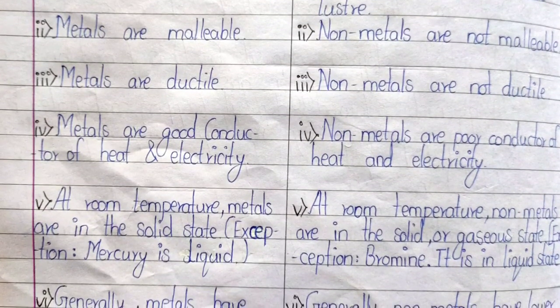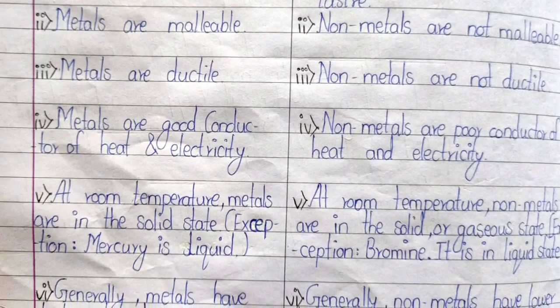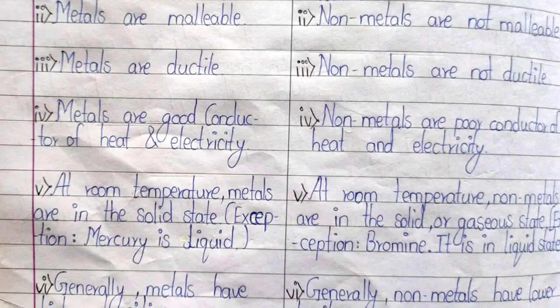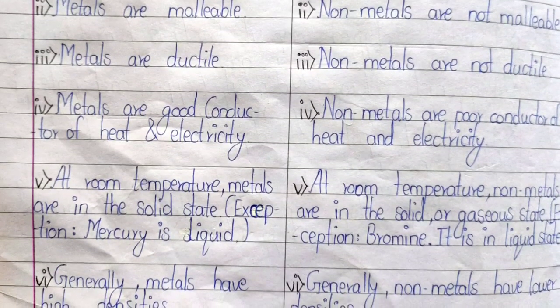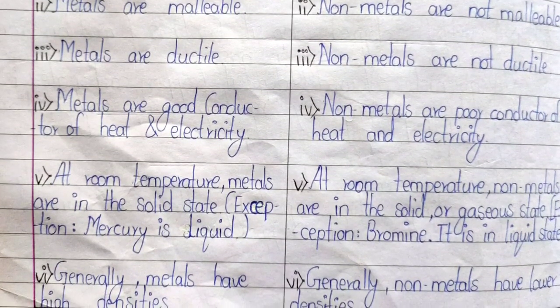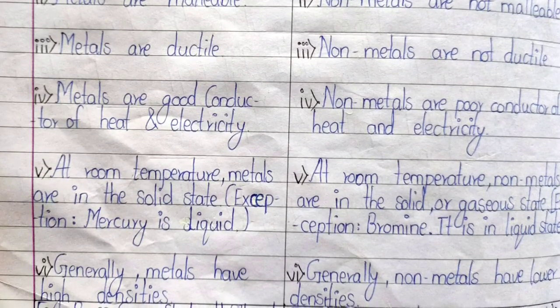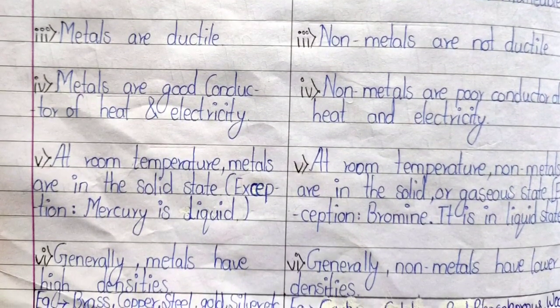Examples of metals are brass, copper, steel, gold, silver, etc. Examples of non-metals are carbon, sulfur, red phosphorus, wood, etc.